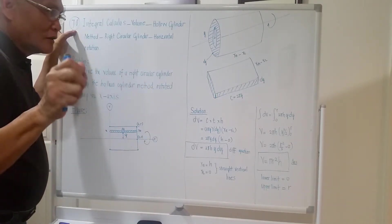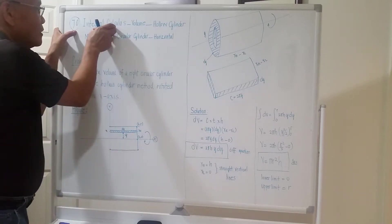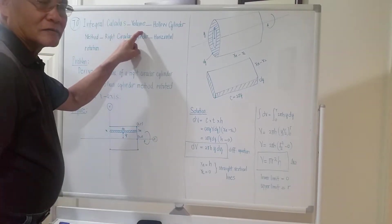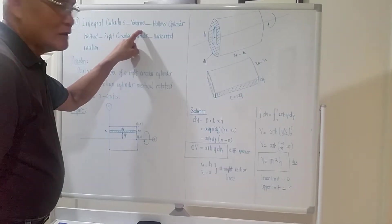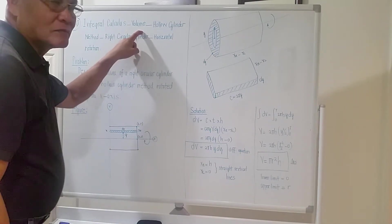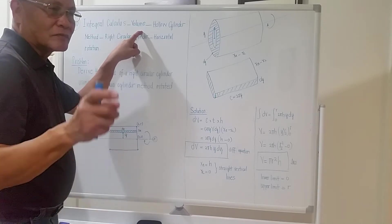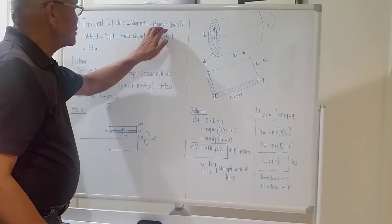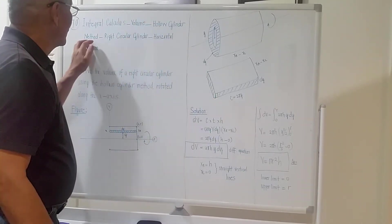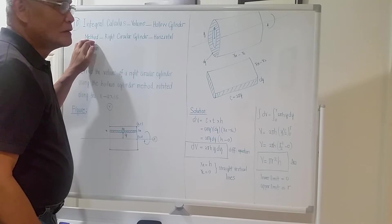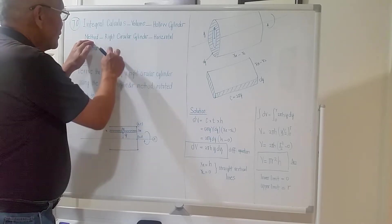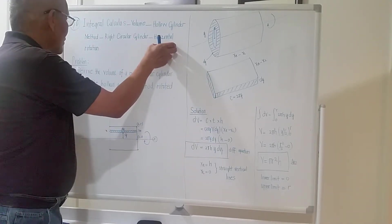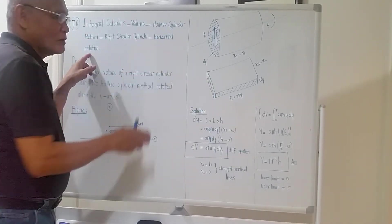The topic is volume, and the method is the hollow cylinder method — right circular cylinder using horizontal rotation.